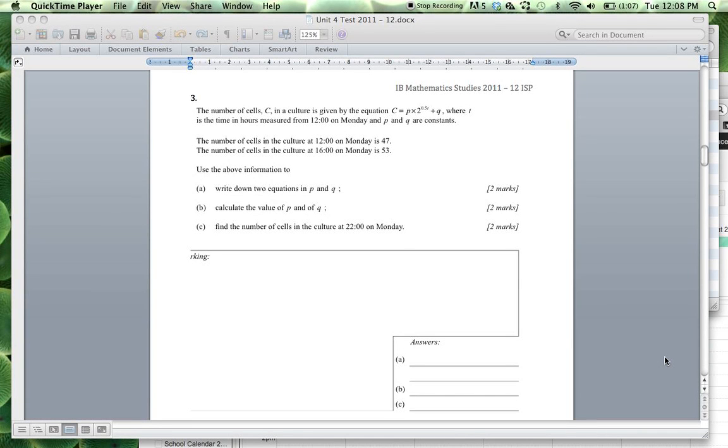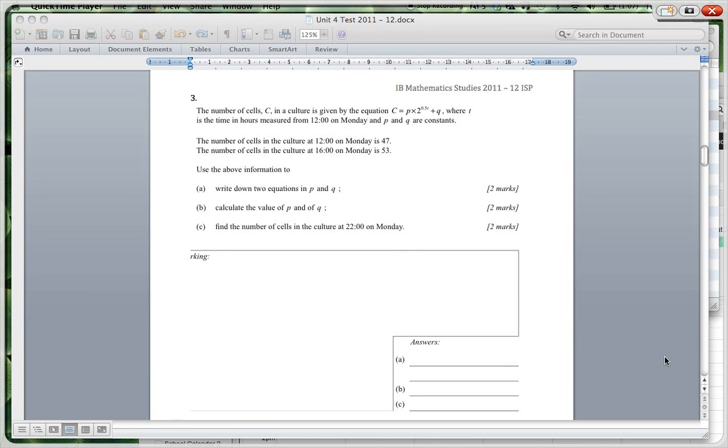Alright, so we've got question 3. The number of cells in a culture is given by this equation C equals P times 2 to the 0.5T plus Q. Now notice this is an important point where T is the time in hours measured from 12 on Monday and P and Q are constants. Then we're told that the number of cells in the culture at 12 is equal to 47 and the number of cultures at 1600 hours is equal to 53. Use the above information to write down two equations for P and Q.